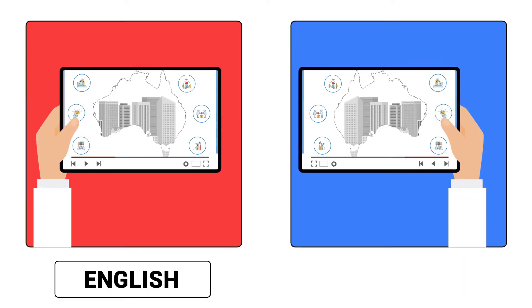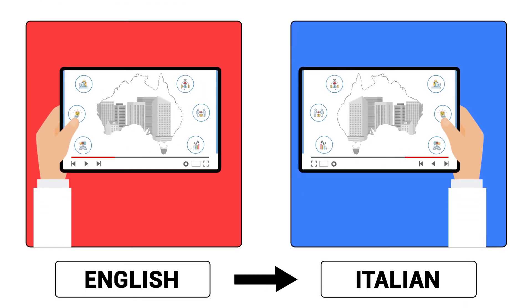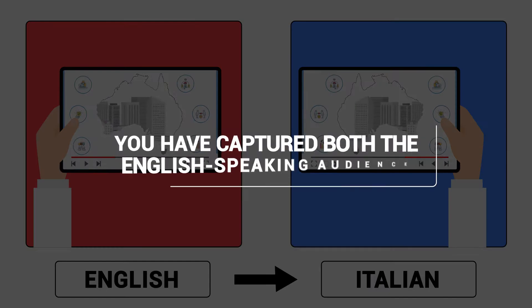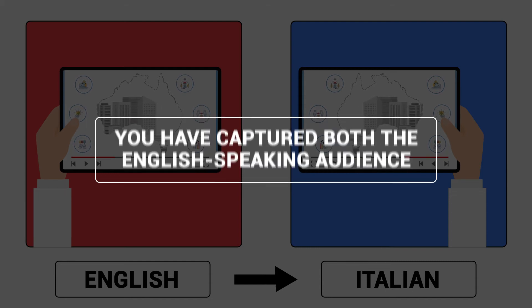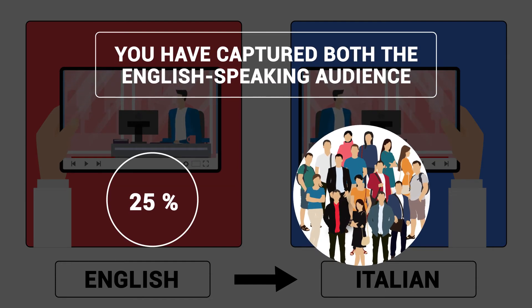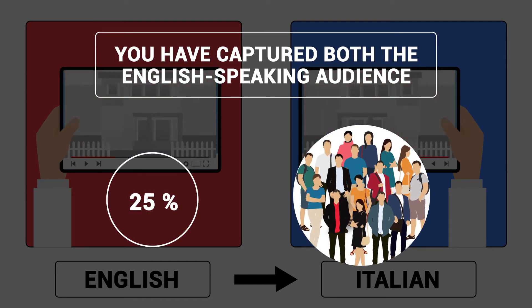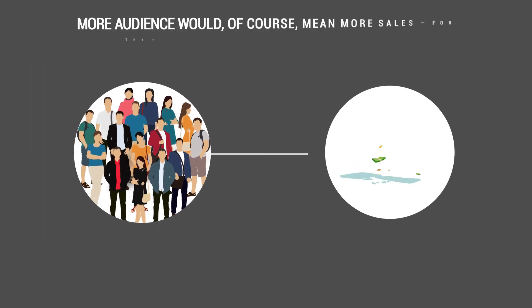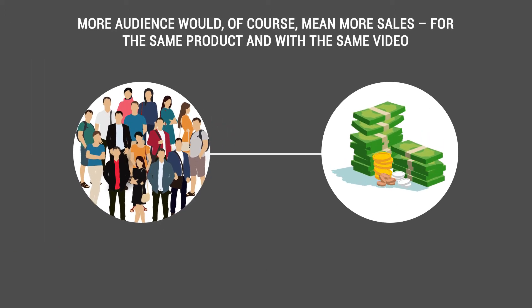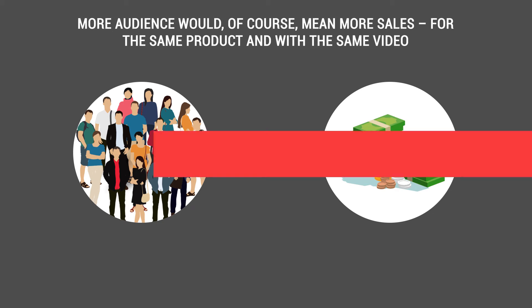So let's say you have a video in English and you translate it into Italian. Now you have captured both the English speaking audience — which, by the way, is only 25% of the people around the world — and the Italian speaking audience. So more audience would, of course, mean more sales, for the same product and with the same video.